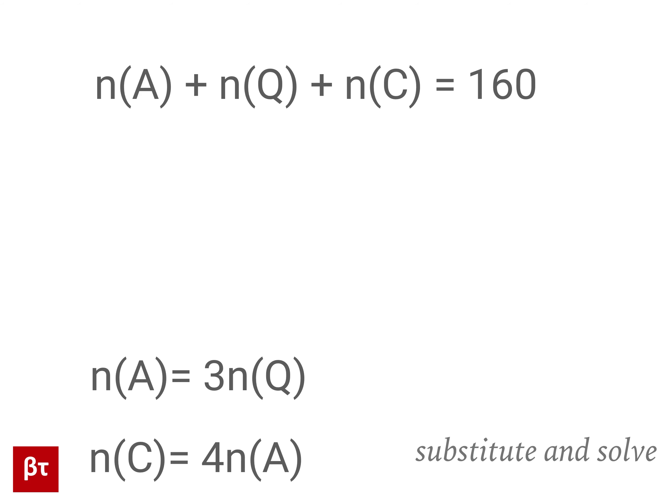Notice that we can substitute the third equation, C equals 4A, into this equation. By doing this, we eliminate C from the first equation and get A plus Q plus 4A.